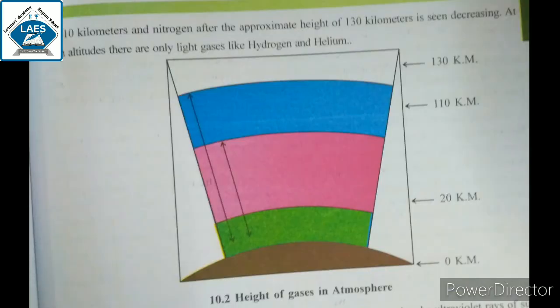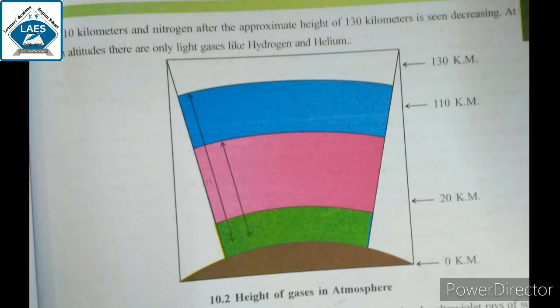You can see various gases in this picture. Other gases are found at 0 km and above. The green color represents carbon dioxide. The height of carbon dioxide decreases by 20 km, so from 20 km onward, carbon dioxide is over. Carbon dioxide is found in the lower strata.